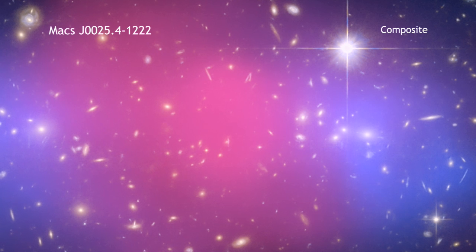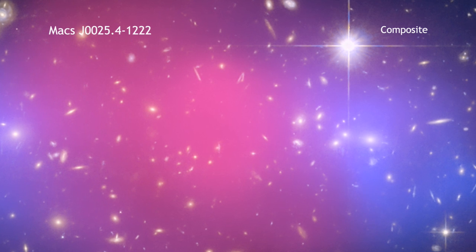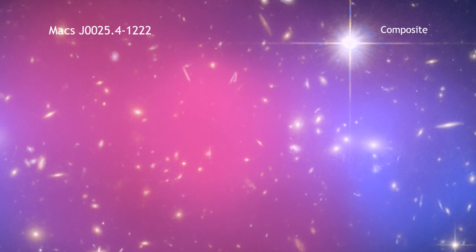When these clusters merged at speeds of millions of miles per hour, the hot gas in each cluster collided and slowed down, but the dark matter in each system did not.